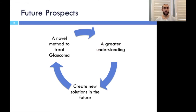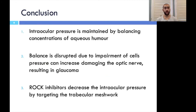The discovery of how ROCK inhibitors mitigate the impact of glaucoma opens up avenues for future solutions. Because the inhibitors target the trabecular meshwork, which is novel, it highlights how further understanding can lead to innovation. To summarize, intraocular pressure is maintained by balancing concentrations of aqueous humor. When this balance is disrupted due to the impairment of cells, pressure can increase, damaging the optic nerve and resulting in glaucoma. ROCK inhibitors decrease the intraocular pressure by targeting the trabecular meshwork, which controls the outflow of humor. Thank you.